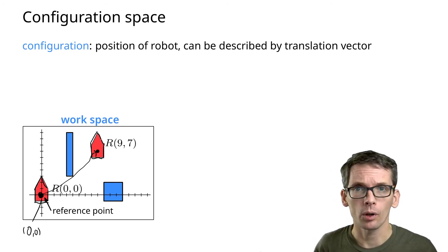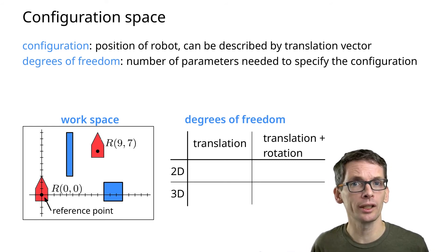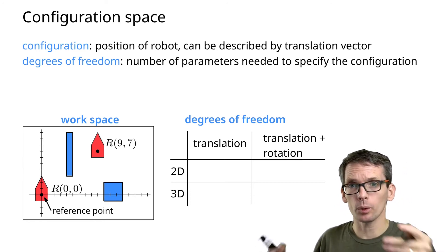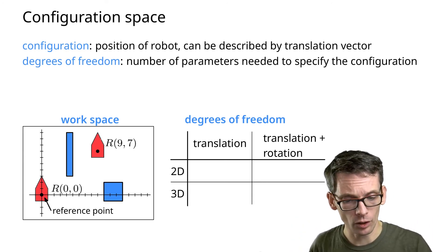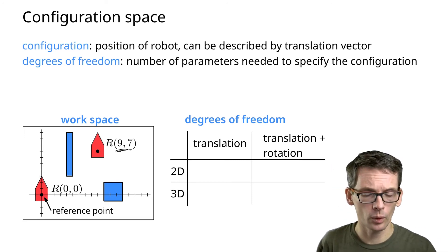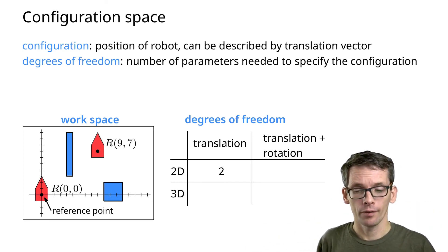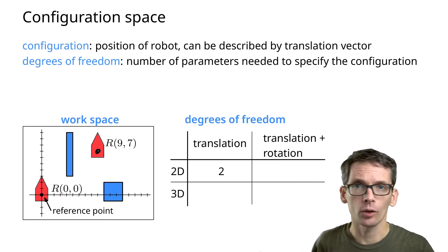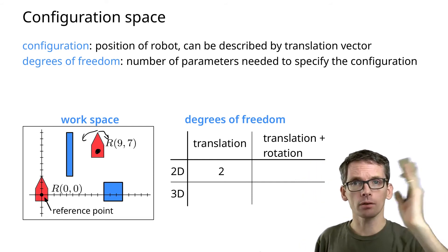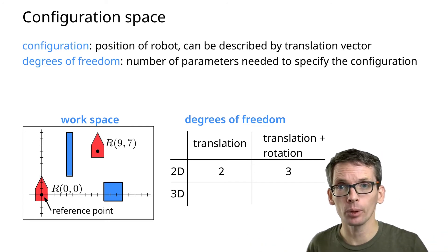In this context we want to talk about degrees of freedom — that is simply the number of parameters needed to describe the configuration. In this example, we are in 2D with only translations, so we need two coordinates: degrees of freedom is 2. If we have translations and rotations, we also need to know which direction the robot is facing — that's one more parameter, an angle — so for translations and rotations in 2D, degrees of freedom is 3. For translations in 3D, degrees of freedom is 3. And for translations and rotations in 3D — think of a drone — degrees of freedom is 6.